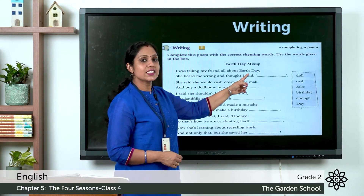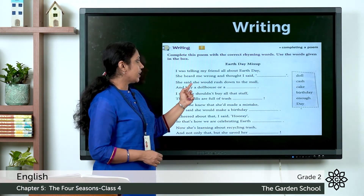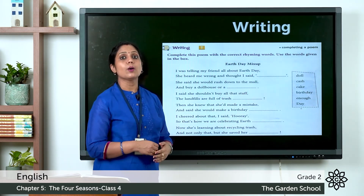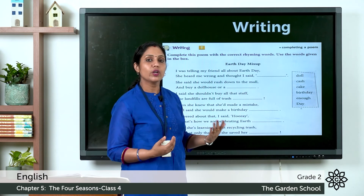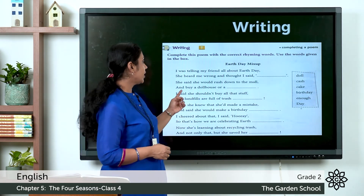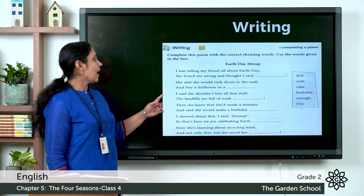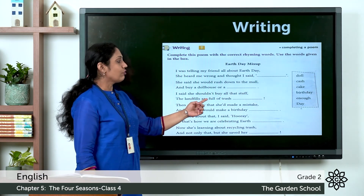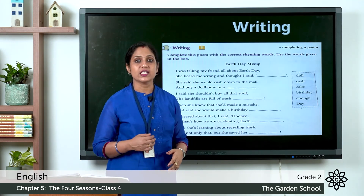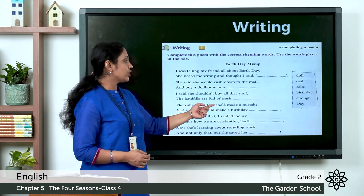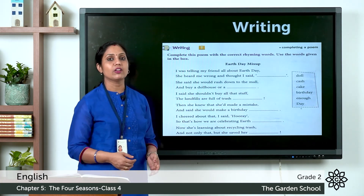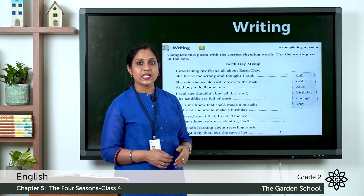Next, the last word of the line is 'mall,' so we find a rhyming word from the box — doll matches mall. So: buy a dollhouse or a doll. For the next line, stuff rhymes with enough, so: the landfills are full of trash enough. Then mistake rhymes with cake, so: she would make a birthday cake.